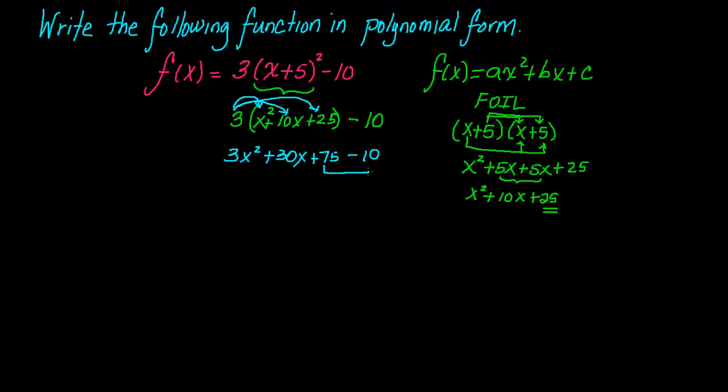And now you have two more like terms here, which you can combine together. And you end up with 3x squared, plus 30x, plus 65. And here you have your function in polynomial form.